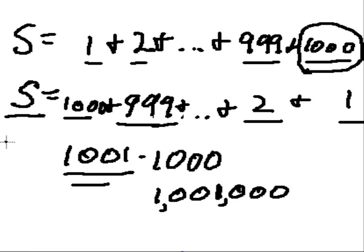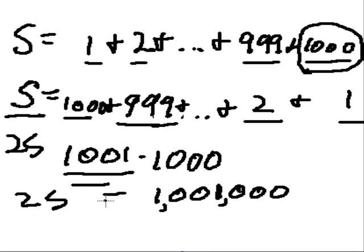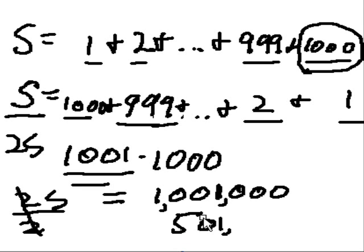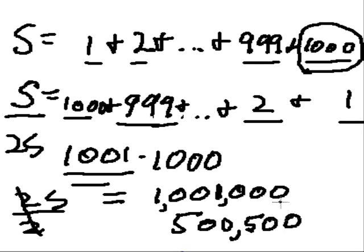That is equal to 2s. Divide by 2: half of 1,000,000 is 500,000, and half of 1,000 is 500. So the answer is 500,500.